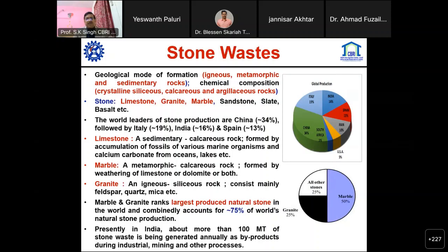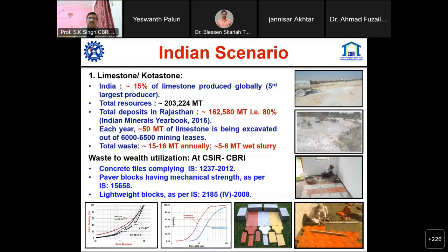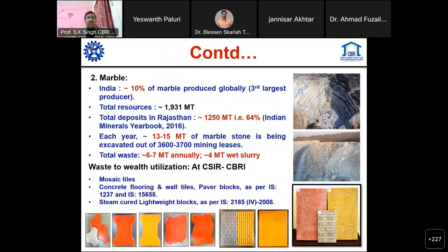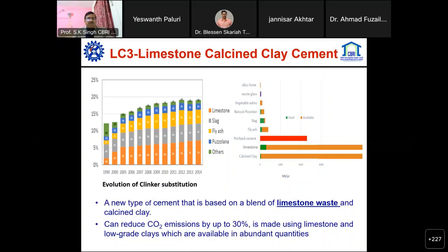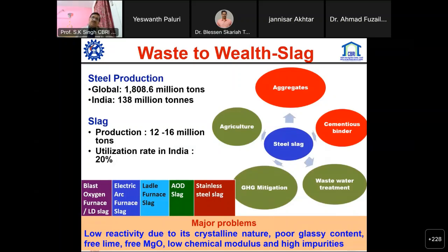At CBRI we are also working very strongly on stone waste - particularly Kota stone, marble stone waste, and slurry - and have successfully demonstrated building products for tiles and bricks. We have carried out experimental investigations and given these technologies to local industries who are making those materials. We are also continuously working on limestone calcined clay cement and recently developed an eco-cement using supplementary cementitious materials.